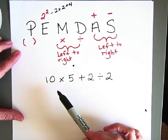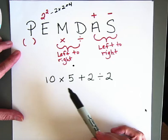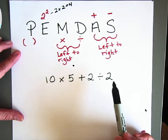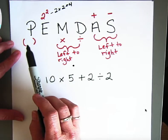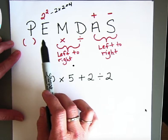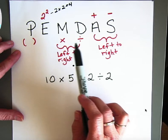So let's take a look at this problem. We have 10 times 5 plus 2 divided by 2. So I can already see I don't have parentheses or exponents, so I need to look at the multiplication and division.